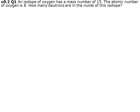An isotope of oxygen has a mass number of 15. It's not the oxygen that appears on the periodic table—this oxygen is a bit different. You'll see why. The atomic number of oxygen is 8. How many neutrons are in the nuclei of this isotope?